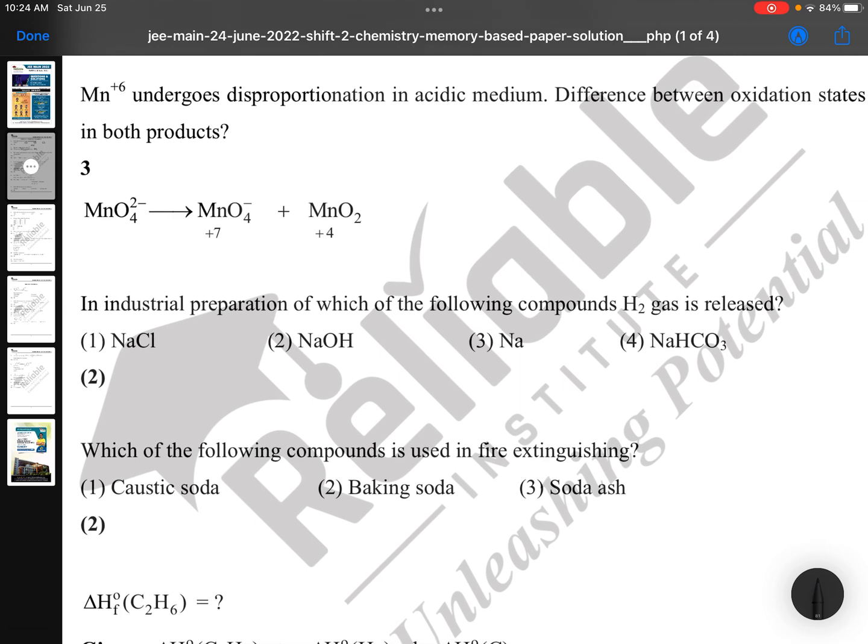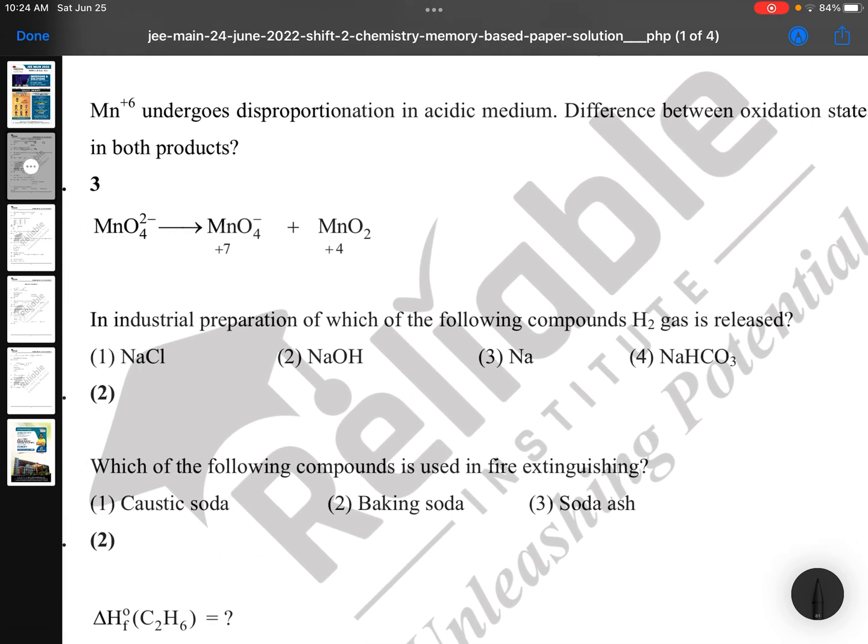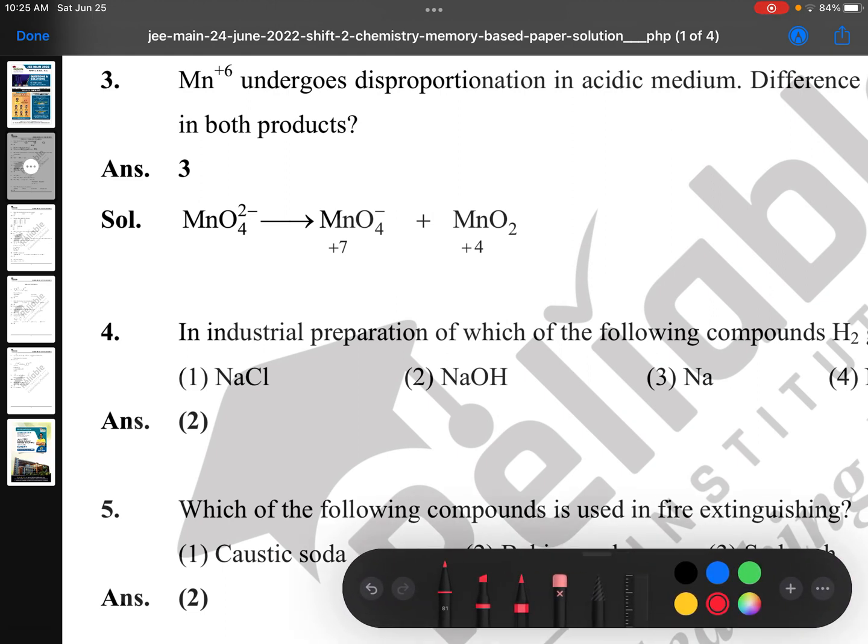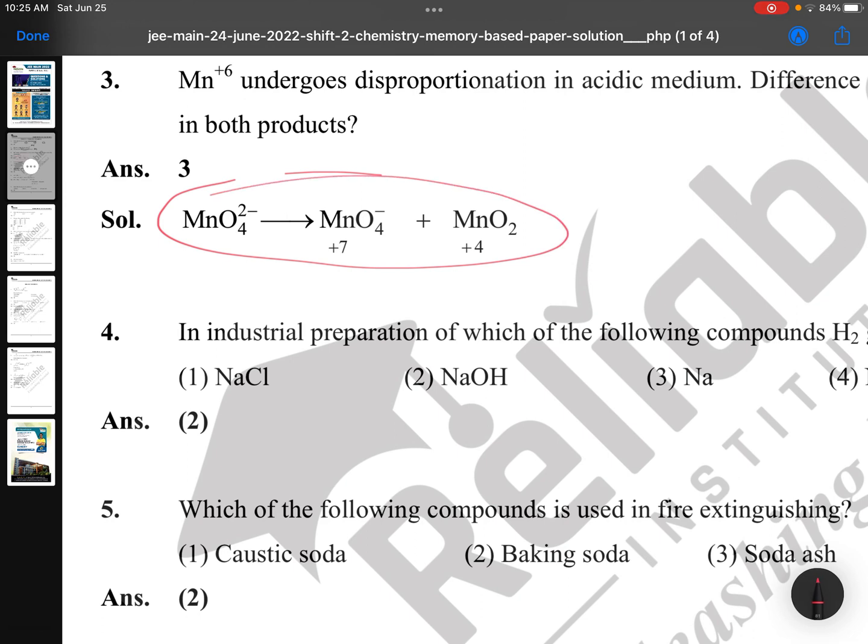Mn+6 undergoes disproportionation in acidic medium. Difference between oxidation states of manganese in both products. This is a bit tricky if you're good at d-block elements. MnO4^2- undergoes to MnO4^- and MnO2. Here +6 oxidation state changes to +7 and +6 changes to +4. The change here is one, change here is two, so the total change is three. Interesting question, you need d-block elements.